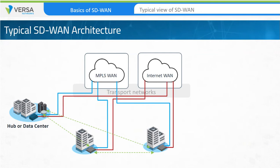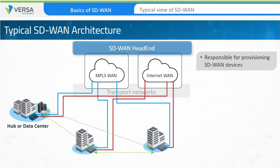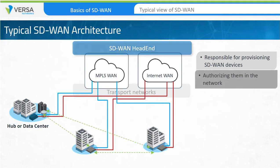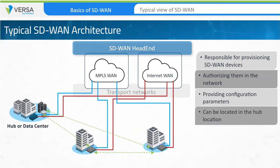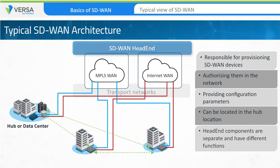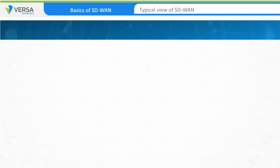The head-end components are responsible for provisioning the branch and hub devices, for authorizing them on the network, and providing configuration parameters. Although it's common to host head-end components in the same location as the hub components, remember that they are separate components and have different roles in the network. The head-end components are the foundation of the SD-WAN environment.